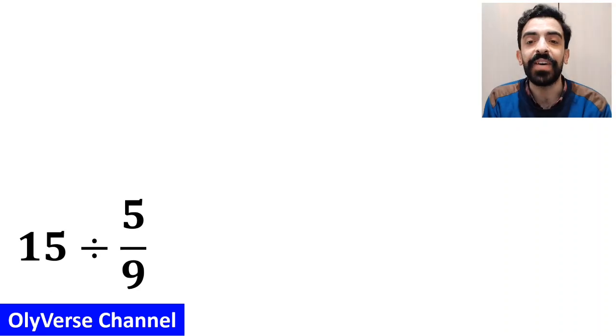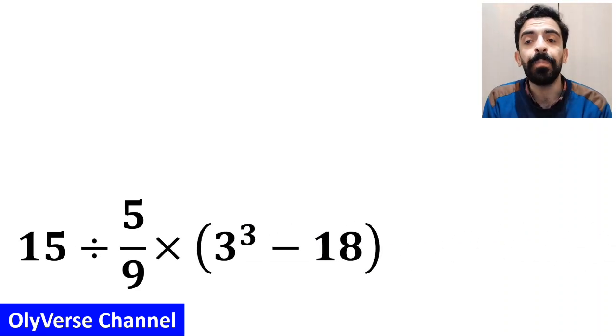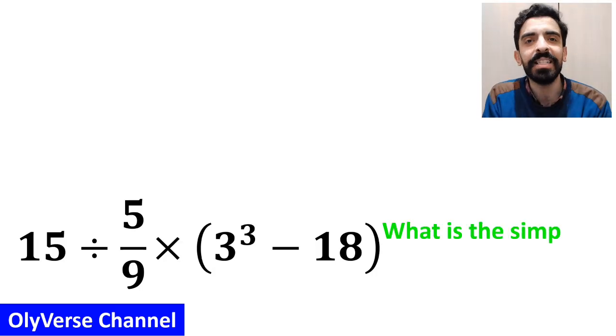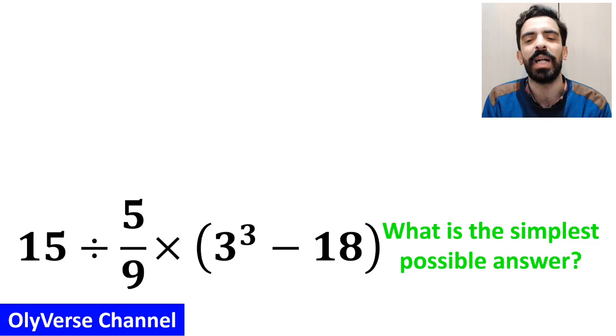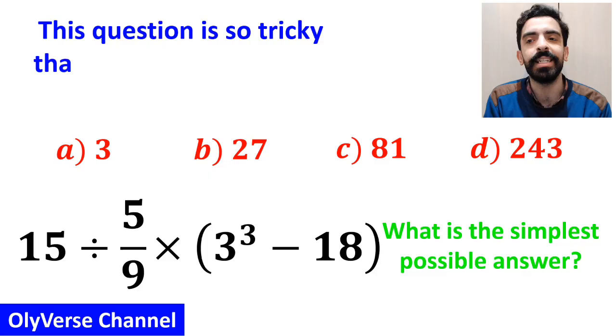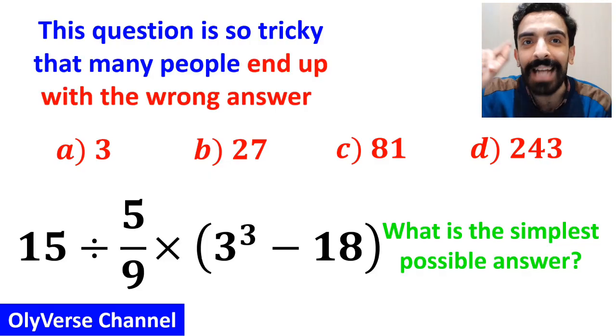If we have the expression 15 divided by 5 over 9 multiplied by open parenthesis 3 to the power of 3 minus 18 close parenthesis, then what is the simplest possible answer for this expression? Which option do you think is the correct answer to this question? This expression is so tricky that many people end up with the wrong answer.